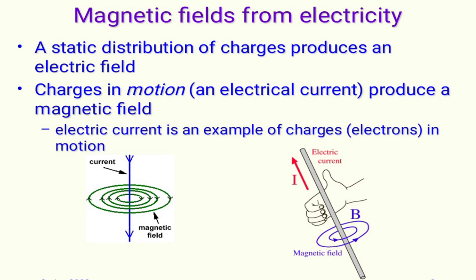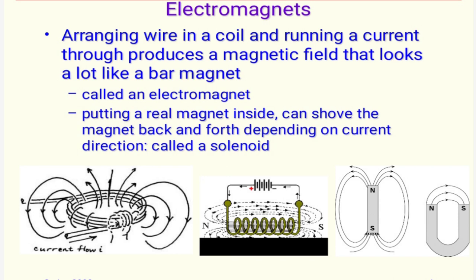A static distribution of charges produces an electric field. Charges in motion — that is, electrical current — produce a magnetic field, as shown in this diagram. Electromagnets are created by arranging wire in a coil and running a current through it, producing a magnetic field similar to a bar magnet. Placing a real magnet inside and moving it back and forth depending on current direction creates what is called a solenoid.